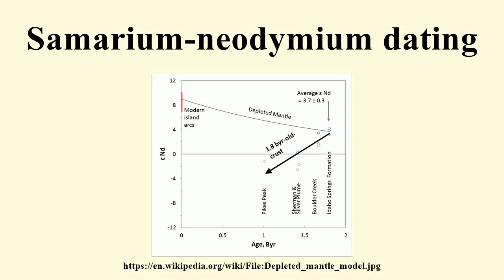Samarium-neodymium dating is useful for determining the age relationships of rocks and meteorites, based on radioactive decay of a long-lived samarium isotope to a radiogenic neodymium isotope. Nd isotope ratios are used to provide information on the source of igneous melts as well as to provide age data. The various reservoirs within the solid earth will have different values of initial 143Nd/144Nd ratios, especially with reference to the mantle.